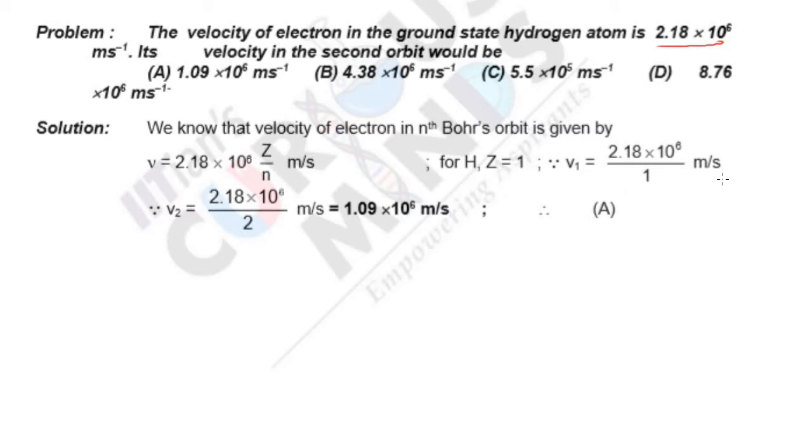You can always remember the formulas for r, v, and E. Writing the formula for v: 2.18 × 10^6 × Z/n m/s for any single electronic species.